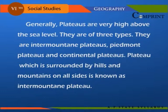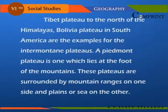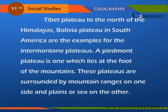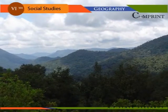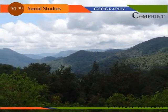A plateau surrounded by hills and mountains on all sides is known as an inter-mountain plateau. The Tibet Plateau to the north of the Himalayas and the Bolivia Plateau in South America are examples. A Piedmont plateau lies at the foot of the mountains and is surrounded by mountain ranges on one side and plains or sea on the other — for example, the Deccan Plateau and the Chotanagpur Plateau.